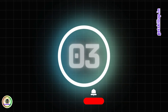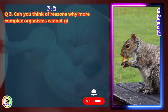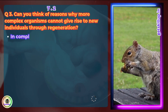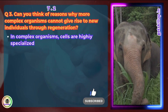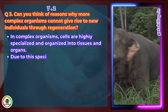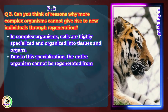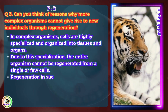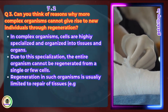Question 3: Can you think of reasons why more complex organisms cannot give rise to new individuals through regeneration? In complex organisms, cells are highly specialized and organized into tissues and organs. Due to this specialization, the entire organism cannot be regenerated from a single or few cells. Regeneration in such organisms is usually limited to repair of tissues, for example, healing wounds.